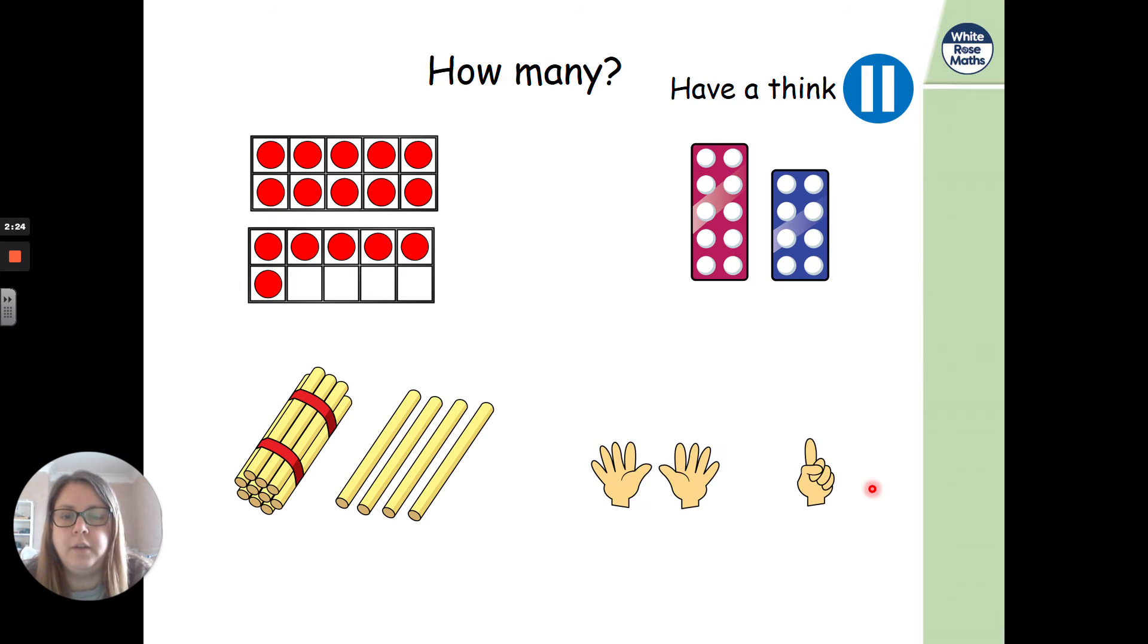Next one then. What have we got here? So what have we got from our 10s frame, numicon, sticks, and our fingers? This time, I want to see if you can have a go at writing the number word. So have a go. It is quite tricky. Maybe our grown-ups will help you and look back at the words that I gave you yesterday. So what is the number word for how we represent this? Number word for this, number word for this, and number word for this. Off you go.